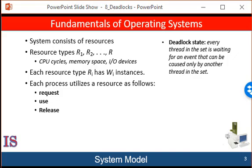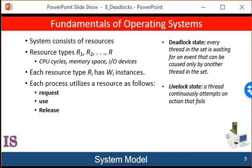Livelock is another form of a liveness failure. It's similar to deadlock in that both prevent two or more threads from proceeding, but the threads are unable to proceed for different reasons. Whereas deadlock occurs when every thread in a set is blocked waiting for an event that can be caused only by another thread in the set, livelock occurs when a thread continuously attempts an action that fails. Livelock is similar to what sometimes happens when two people attempt to pass in a hallway: one moves to his right, the other moves to her left, and they're still obstructing each other. Then the first moves to his left, the other moves to her right, and they're still obstructing each other. They aren't blocked, but they aren't making any progress either. Livelock typically occurs when threads retry failing operations at the same time, and can generally be avoided by having each thread retry the failing operation at random times.